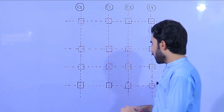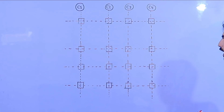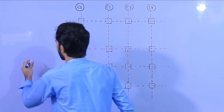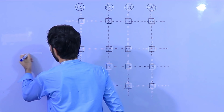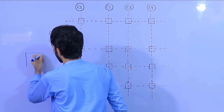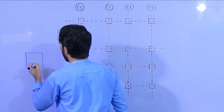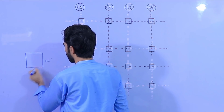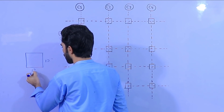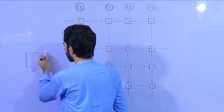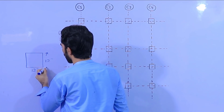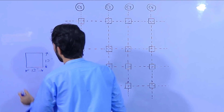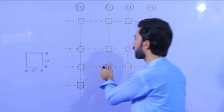First of all, we require the size of the column. For example, the size of the column here is 12 by 12 inches. So how can you do the foundation layout, especially for the column marking?